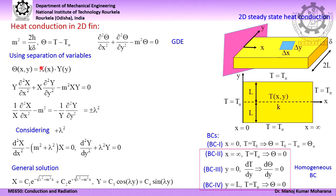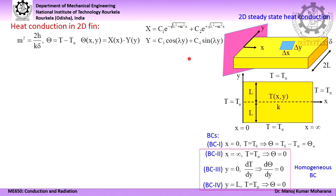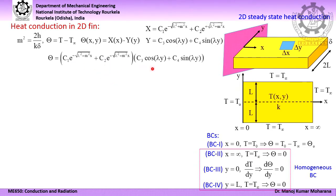The general solution for X is: C₁·e^(−√(λ²+m²)·x) plus C₂·e^(+√(λ²+m²)·x). The general solution for Y is: C₃·cos(λy) plus C₄·sin(λy). And theta equals the product of X and Y. We can take X and Y separately, then multiply them — that gives the value of theta as a function of x and y. The expression for theta is written here by multiplying these two expressions.